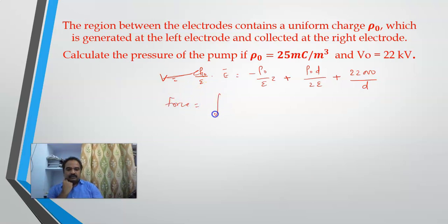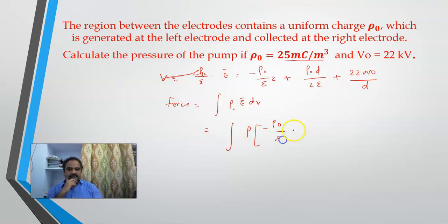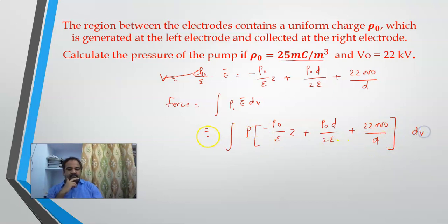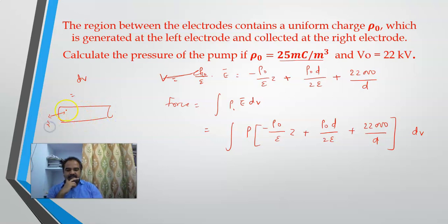Force equals the integral of rho times E bar dV. I have rho in millicoulombs per meter cube. The differential volume dV: since the surface area S is constant and only z varies from 0 to d, dV equals S times dz. So S and rho are constants that can be taken outside the integral.